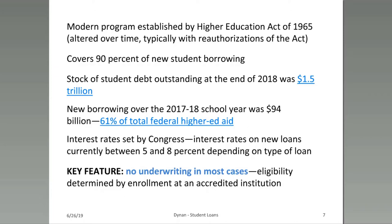Interest rates on new loans are set by Congress and currently range between 5% and 8% depending on the type of loan — not a bad rate for a large amount of unsecured debt. A really key feature of the student loan program is that there's no traditional underwriting in most cases. Eligibility is determined by enrollment at an accredited institution, which is essential for economic mobility.